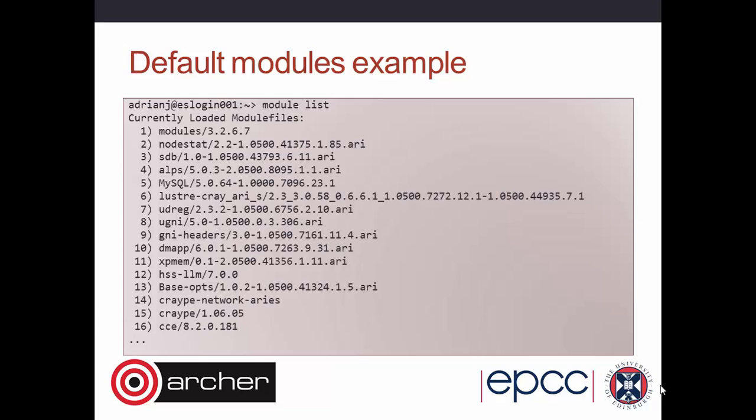Here's an example: a colleague, Adrian, has done 'module list' and you can see a whole bunch of stuff there. What it's showing you is software packages — for example, CrayPE is the Cray programming environment — and after the slash there's a version number.